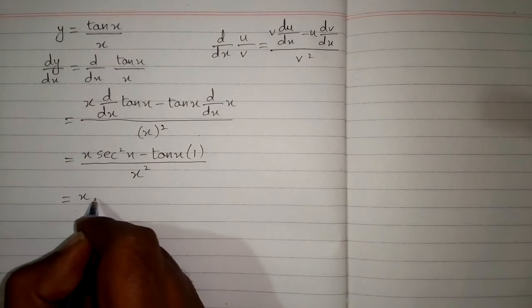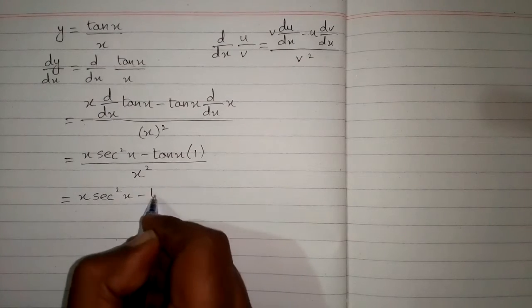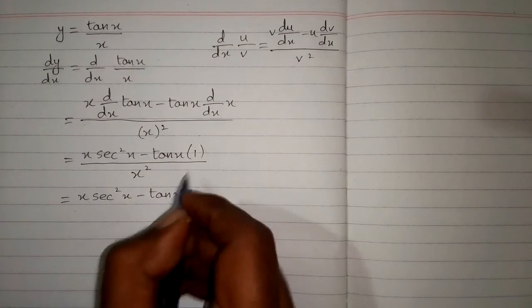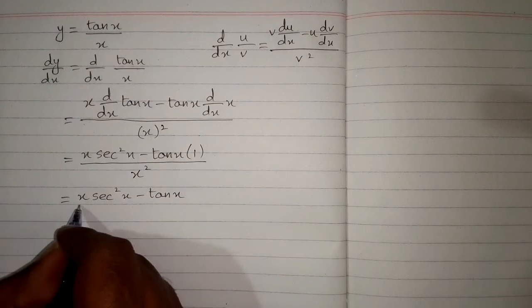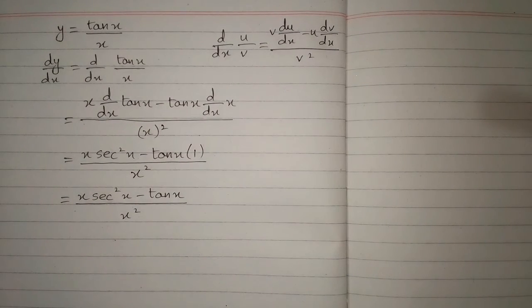So the required answer is x times sec square x minus tan x, because tan x multiplied by 1 is tan x, upon x square. So this is the required answer.